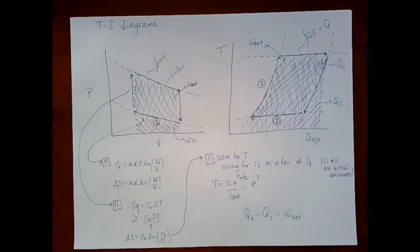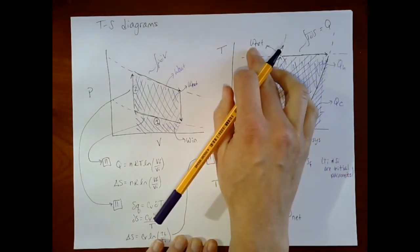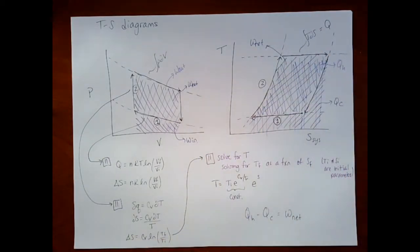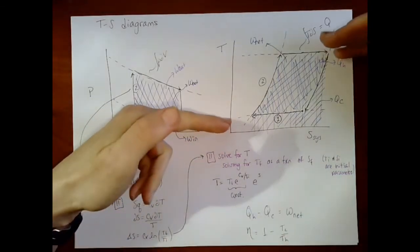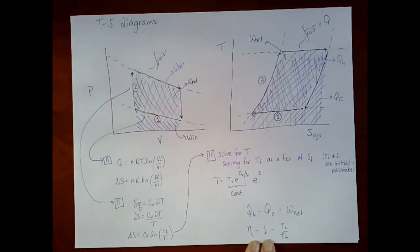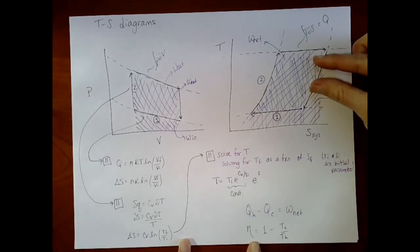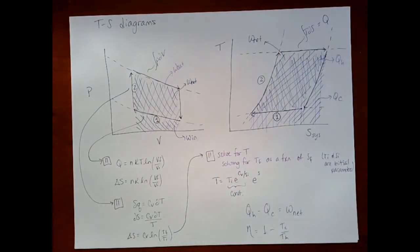So our temperature entropy diagrams can give us a visualization of how much work we can get out of a process in relationship to how much heat we had to put in. And you can begin to see, recall from our efficiency equation, you can begin to see that if we reduce the gap between these, the temperature range, our efficiency goes down and that shows up as the area between these curves that is encompassed by these curves going down. So our net work is also, we're getting less net work out. So these temperature entropy diagrams are basically a picture of the efficiency of our engine.